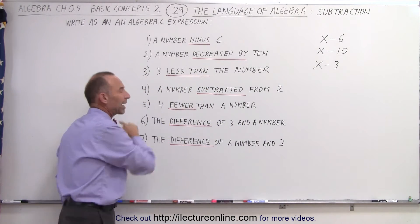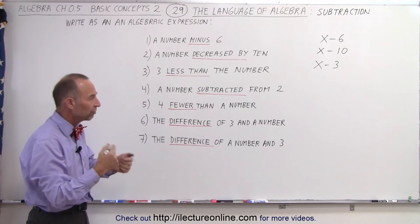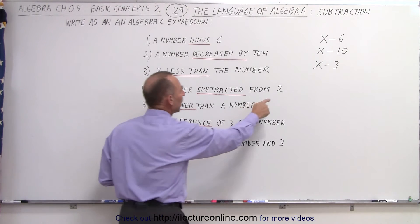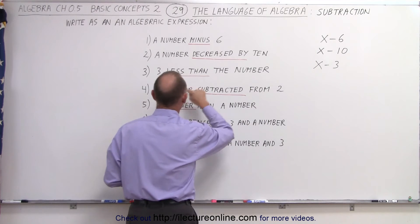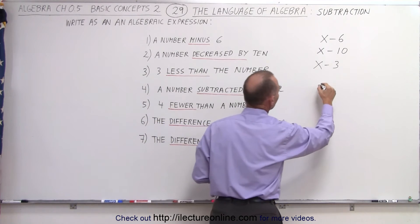A number subtracted from 2. Now the order is different. We take 2 and subtract from that, from the 2, a number. So this becomes 2 minus x.